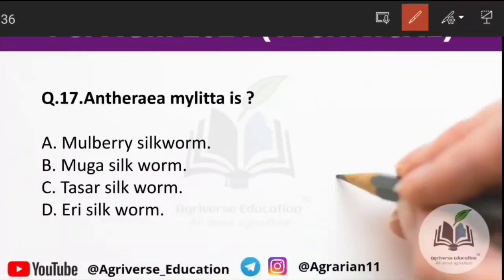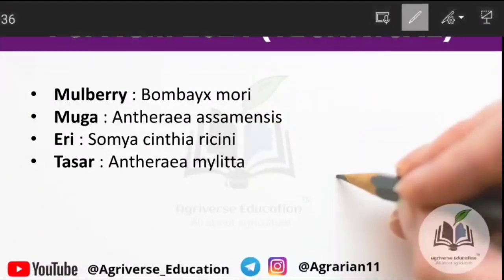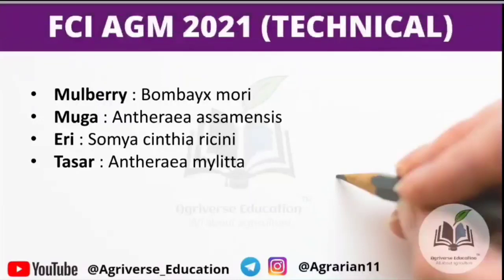Question 17: Antheraea mylita is the scientific name of tasar silkworm. Other silkworm scientific names: mulberry silkworm is Bombyx mori; muga silkworm is Antheraea assamensis; eri silkworm is Samia cynthia ricini; tasar silkworm is Antheraea mylita.